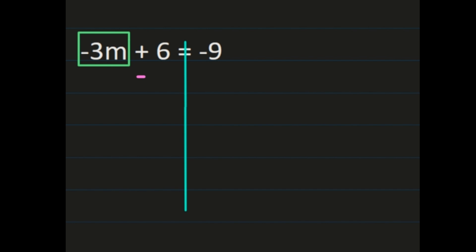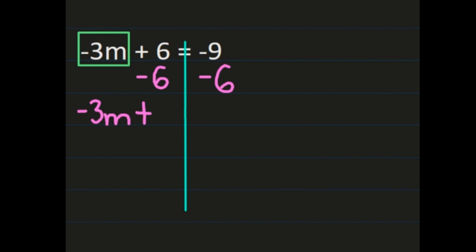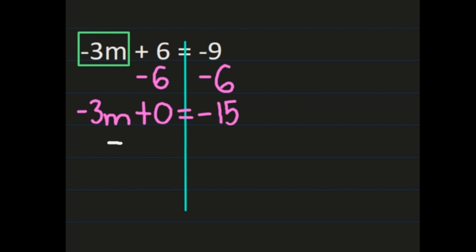If negative 3m is what I want to have by itself first, I have negative 3m plus 6, which means the inverse operation is to subtract 6. I'm going to subtract 6 from both sides. On the left-hand side, I haven't done anything to the negative 3m. Then I have plus 6 minus 6, which is 0. On the right, I have negative 9 minus 6. You have to follow the rules for adding integers with the same sign — add the integers and keep the sign. So 9 plus 6 is 15, and we keep the negative sign.